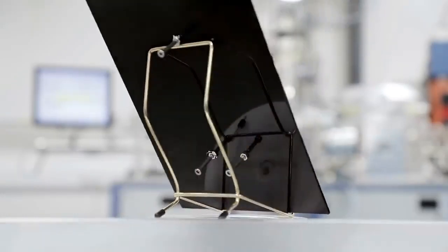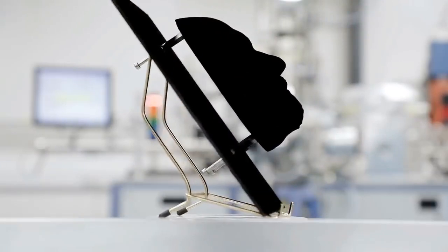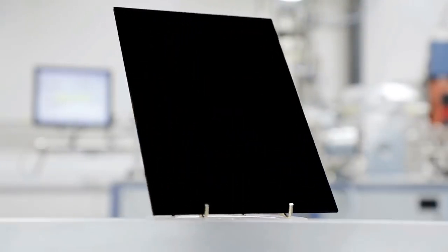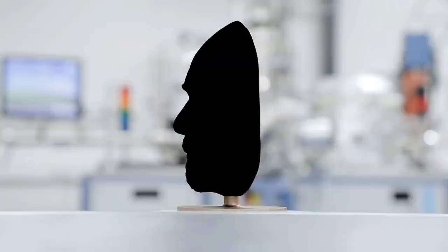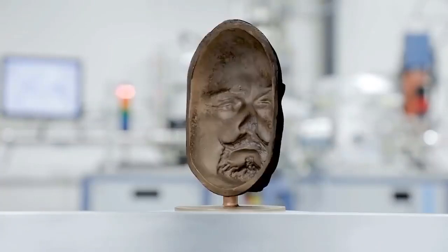Vantablack is the definition of darkness. It's a material that absorbs 99.965% of ultraviolet, visible and infrared light. This super black coating holds the Guinness World Record as the darkest man-made substance.